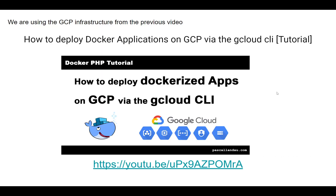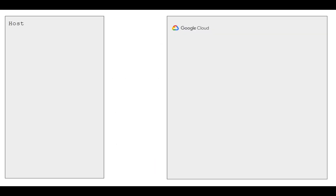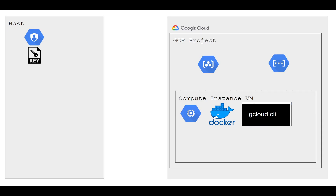We are using the infrastructure created in the previous video, how to deploy Docker applications on GCP via the gcloud CLI. For this video, I'm going to assume a couple of things: there should be a GCP project with a configured container registry, a secret manager, and a running compute instance virtual machine that is fully provisioned. That means Docker is installed, the gcloud CLI is available, and the root user is authenticated to use Docker. In addition, a service account should be created and the corresponding key file should live in the codebase on the host system.